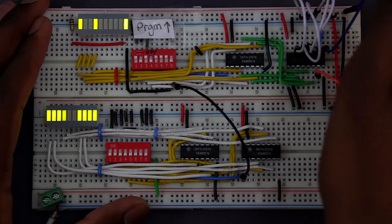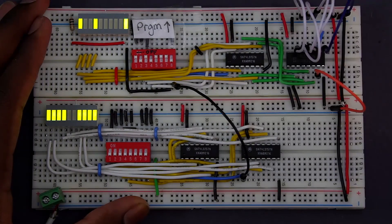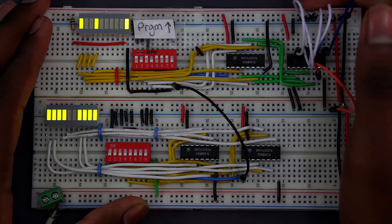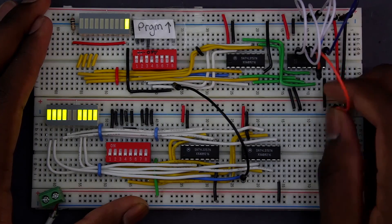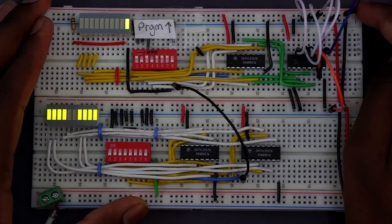If we set the enable line low, then when the clock pulse goes high, the register should load the bus values, which are these white wires, which are all connected low. And, as you can see, that's what happens.